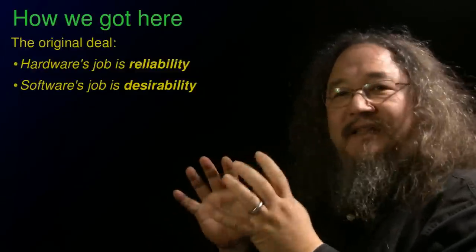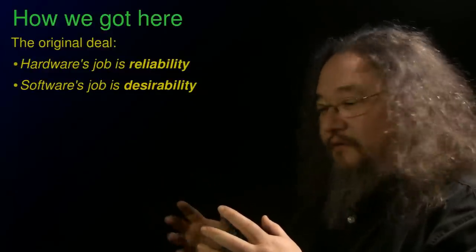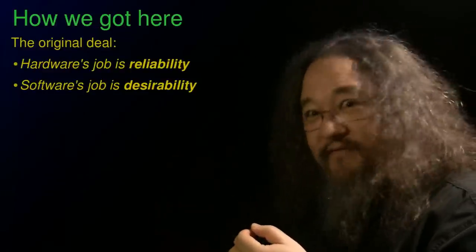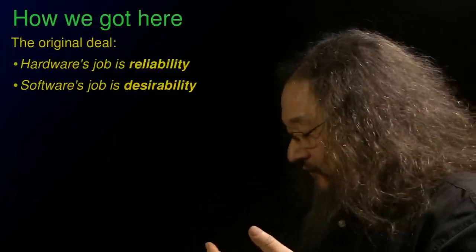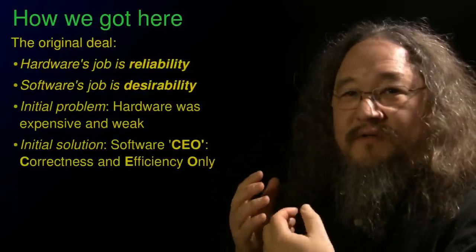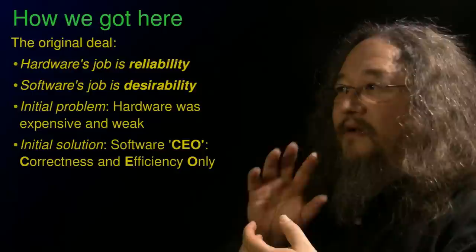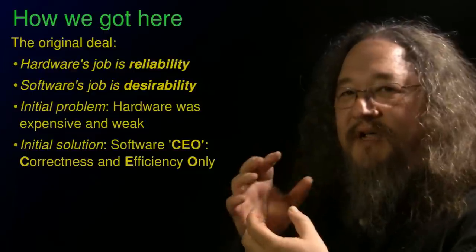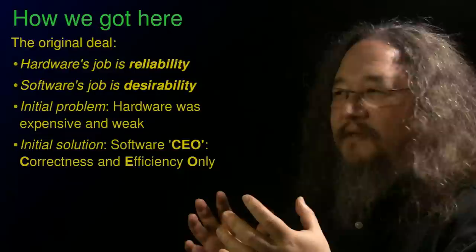Software's job is to take logic and turn it into functions that are valuable, turn it into something that's desirable enough to provide enough revenue to pay for the hardware and the software and everything together. And that's the way the deal worked. At first, hardware was incredibly expensive and really weak. And that created incredible pressure on the software to get as much desirability as possible out of the sunk cost of whatever hardware you were dealing with.